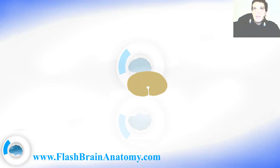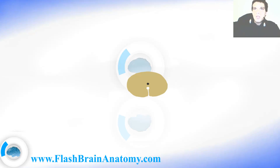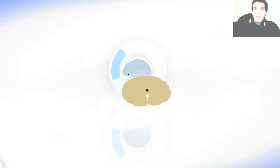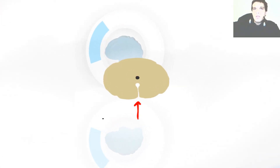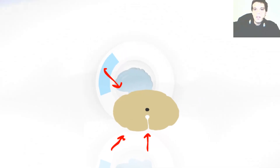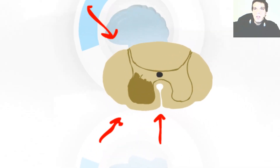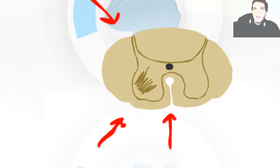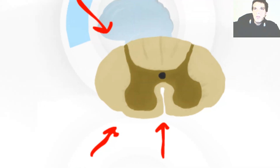Now we'll be looking at the cross-section of the spinal cord. First I draw the spinal cord cross-section with the central canal. Over here the median fissure on the anterior side, the anterolateral sulcus, the posterolateral sulcus, and of course we have the gray matter. This is the anterior horn and then comes the posterior horn.